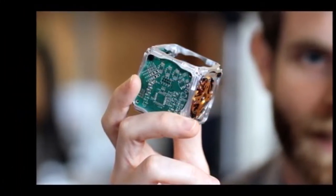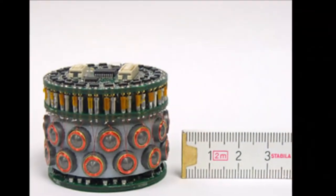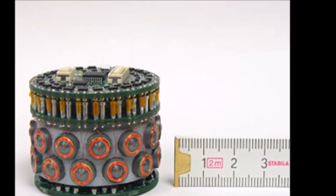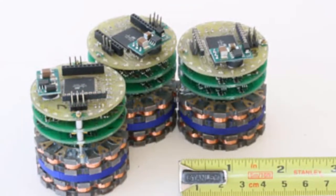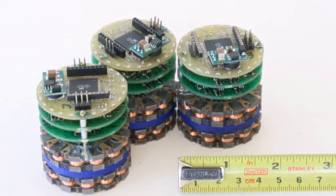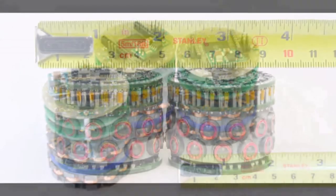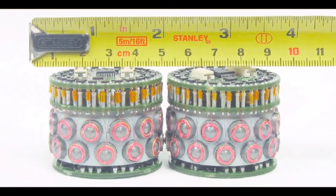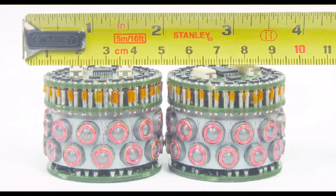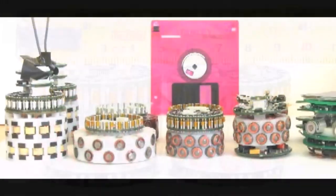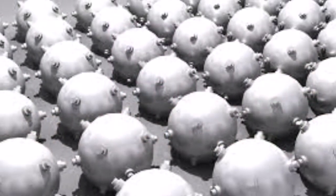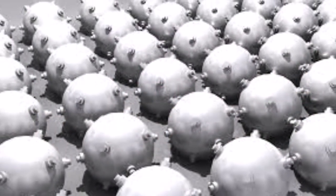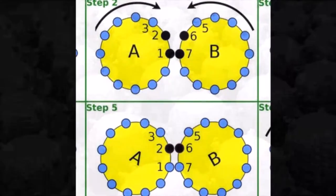Claytronics consists of a collection of individual components called claytronic atoms, or catoms. In order to be viable, catoms need to fit a set of criteria. First, catoms need to be able to move in three dimensions relative to each other and be able to adhere to each other to form a three-dimensional shape. Second, the catoms need to be able to communicate with each other in an ensemble and be able to compute state information, possibly with assistance from each other.